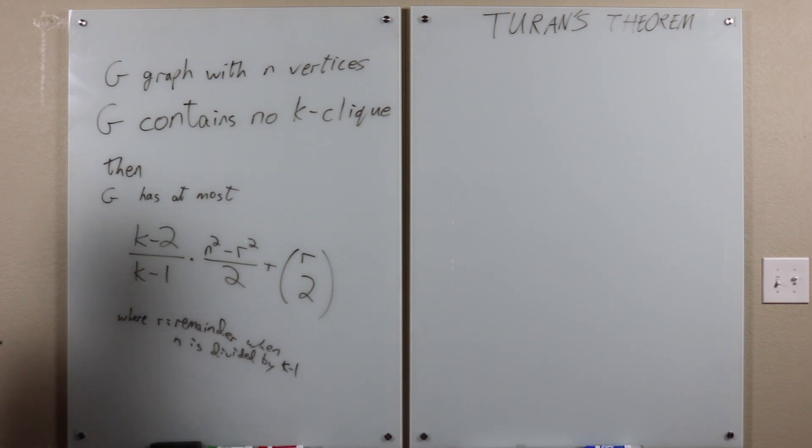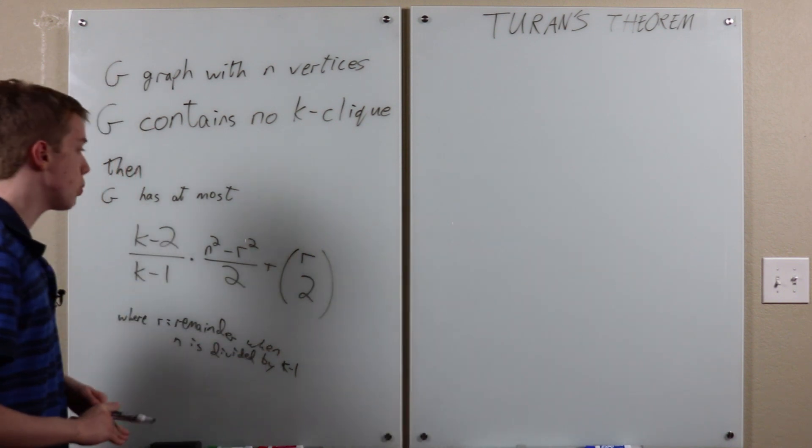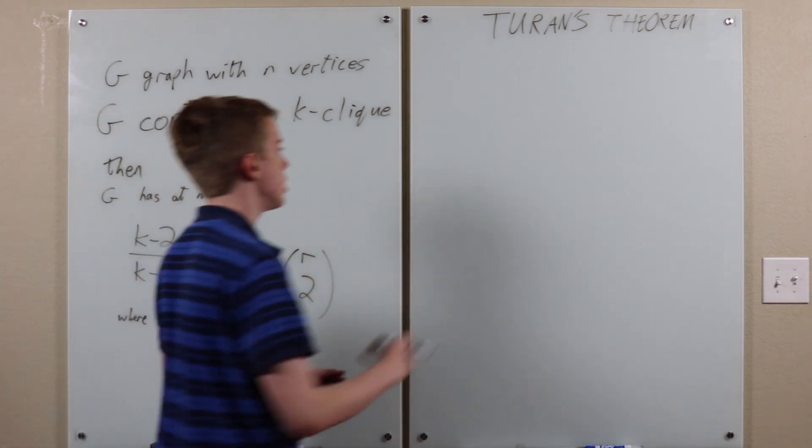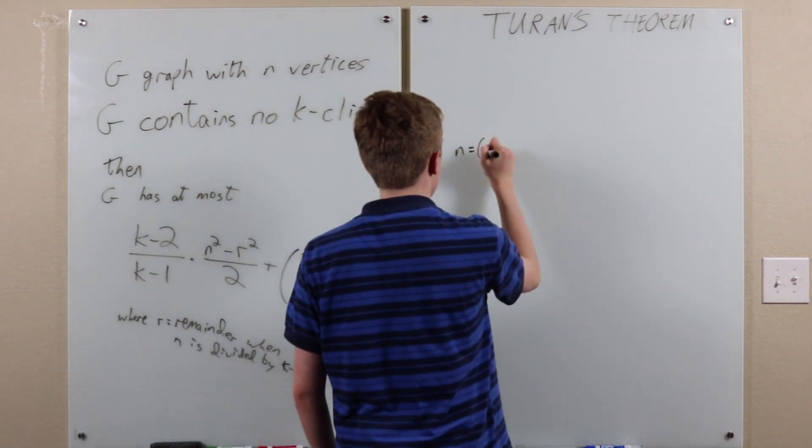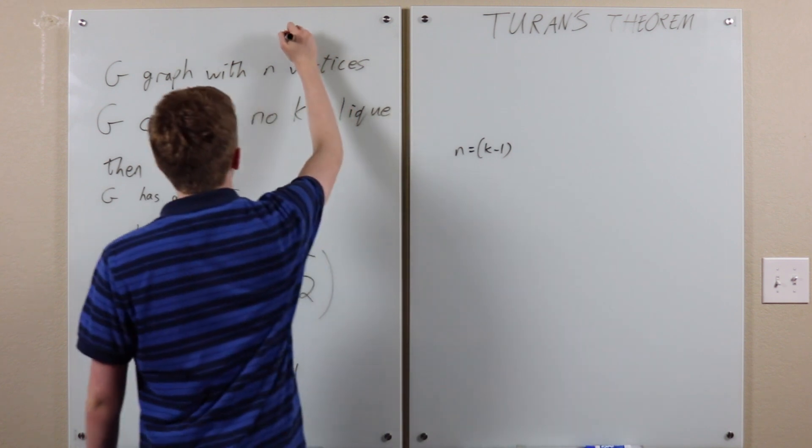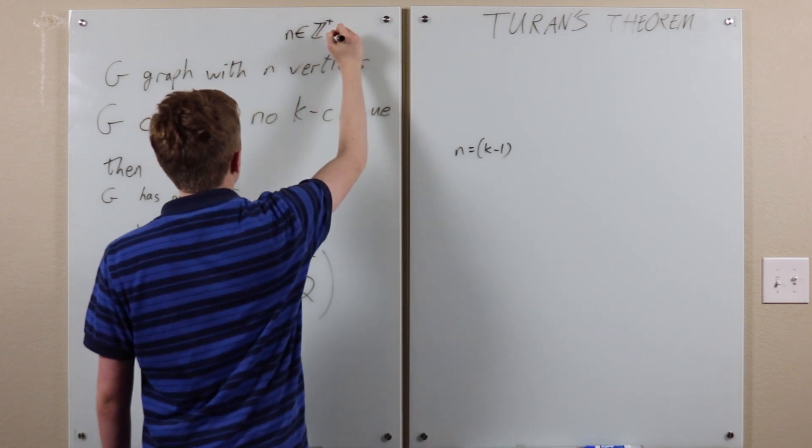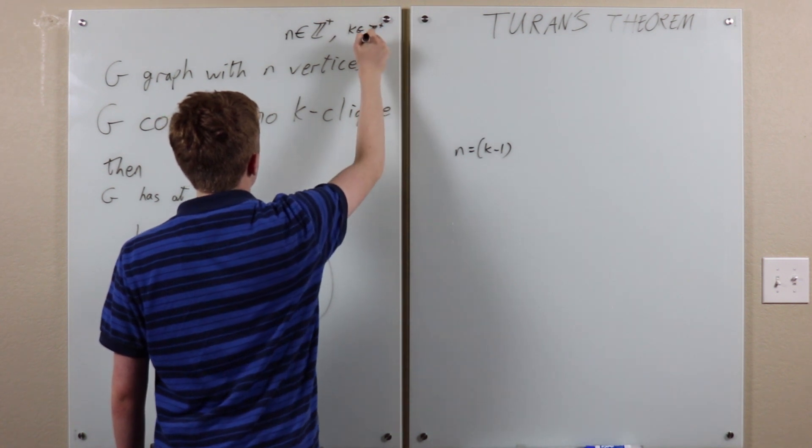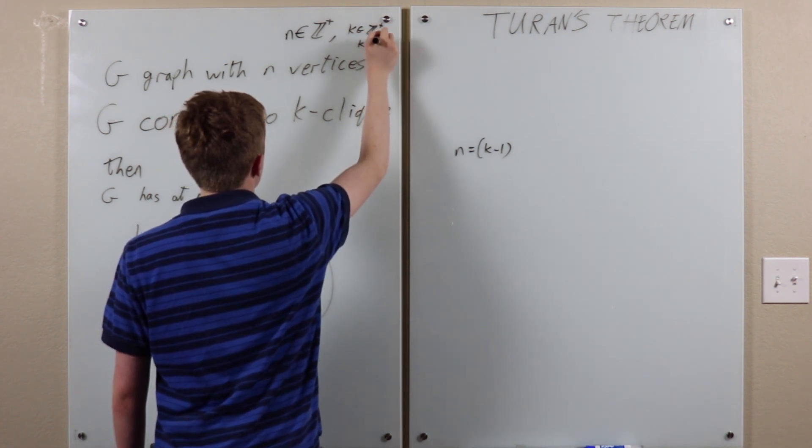So first of all, to see why this is the bound we want, let's write n as this. n is a positive integer, k is a positive integer, k is greater than or equal to 2.